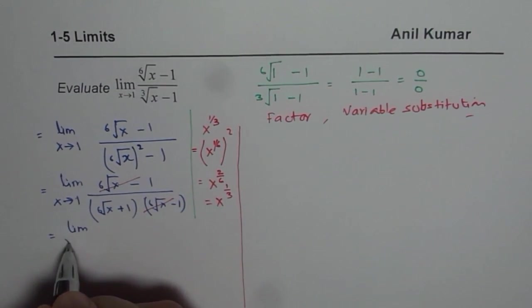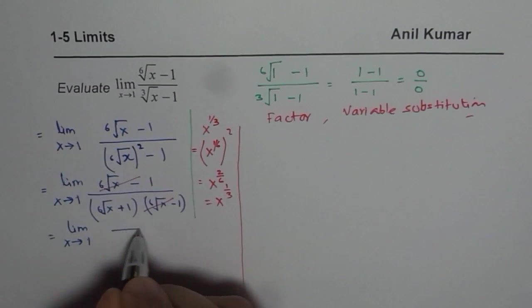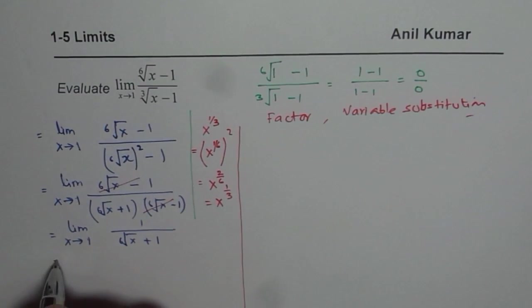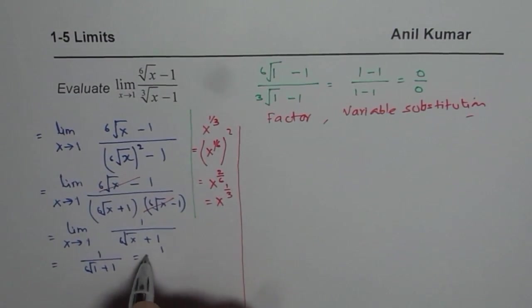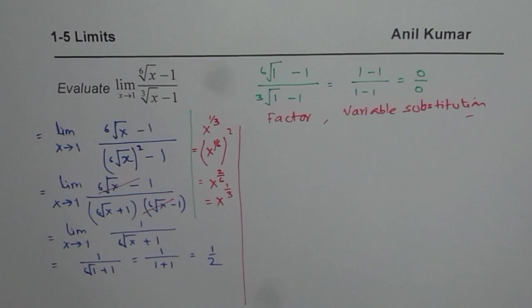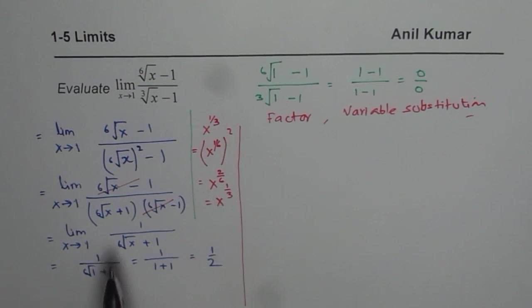So the whole idea was to find a common factor in numerator and denominator. So once you cancel, we get 1 over 6th root of x plus 1 and now you can substitute 1 here, right? So we get 1 over 6th root of 1 plus 1, which is 1 over 1 plus 1 or equals to half. So that is your answer for the given limit, right? So this is factoring.